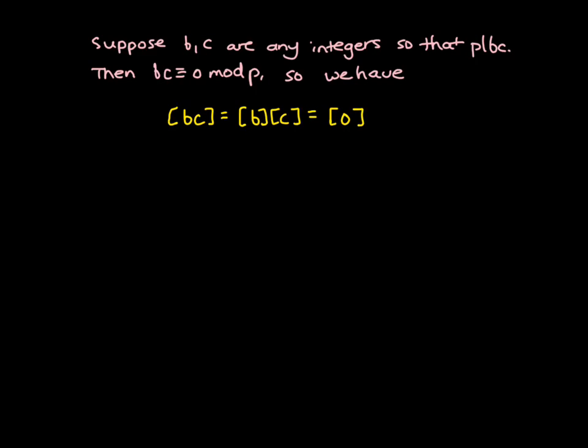So by assumption, when we have b times c equaling 0, this implies that b is equal to 0 or c is equal to 0.